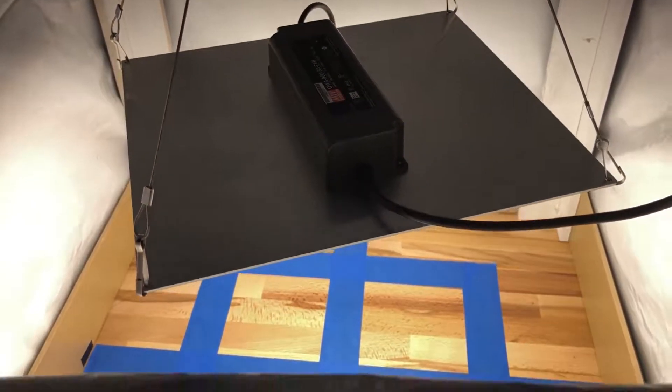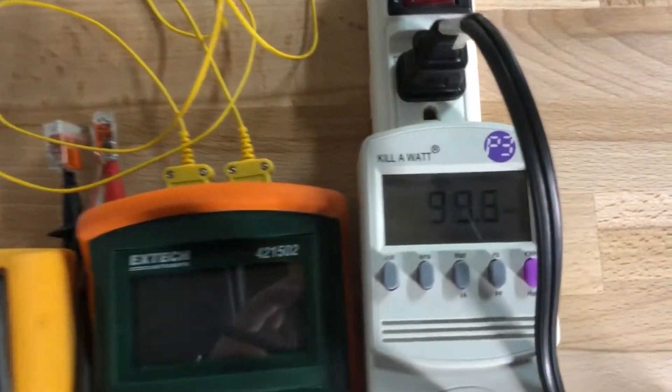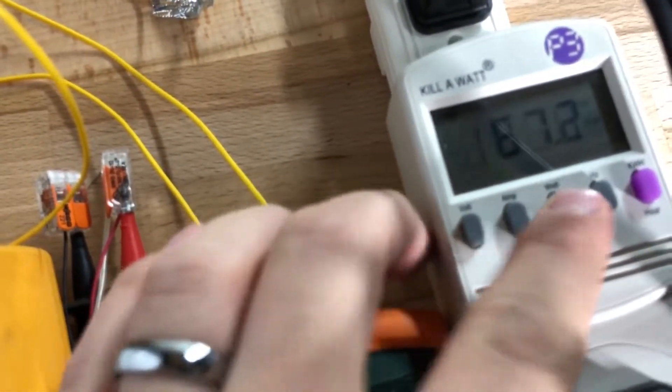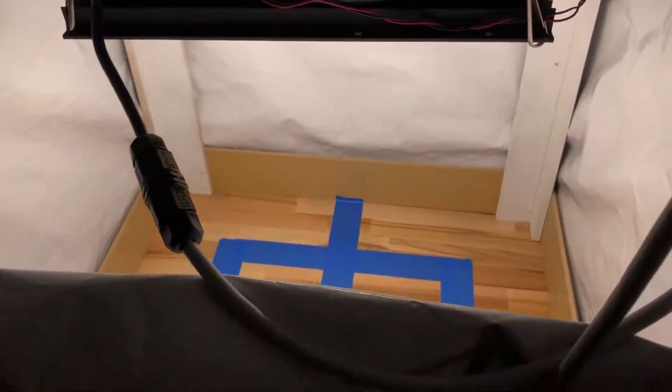In terms of power draw, true to its name, the HLG100 pulls about 100 watts from the wall, the HLG65 watt kit was pulling 67 watts, and the 135 watt kit was actually pulling about 158 watts.